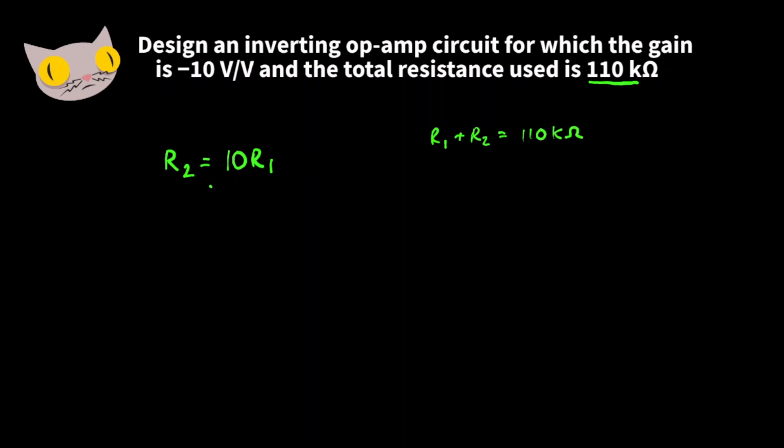Let's take this value of R2 and put it in this equation. So now we have R1 plus 10R1 is equal to 110,000 ohms. These two terms share the same variable, so we can combine them.